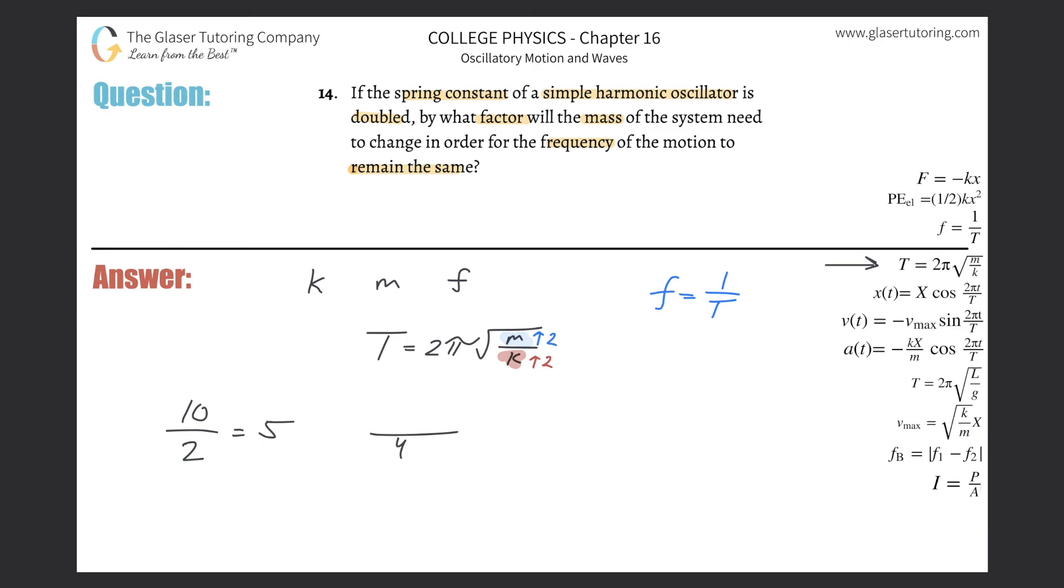make it 4, what must you do to the numerator in order for this answer to come out to be 5 again? Well you'd have to double it as well. If you put in 20 here, it's 20 over 4 is 5. So if I double the denominator I better double the numerator in order for the ratio to remain the same.